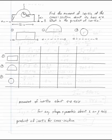Find the moment of inertia of the cross-section about its base AA and what is the product of inertia. This is clearly a composite body. I need to break it up into its three pieces. The first is the rectangle, which is 12 inches by 4 inches.